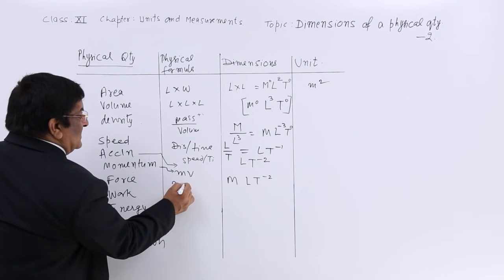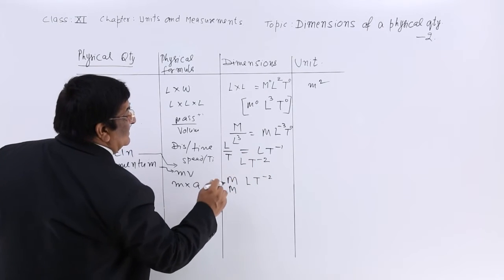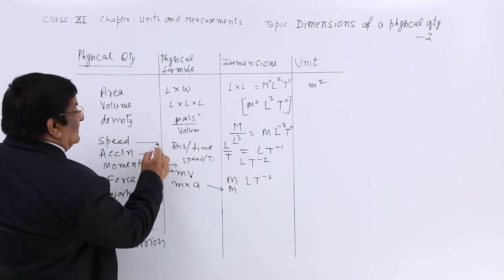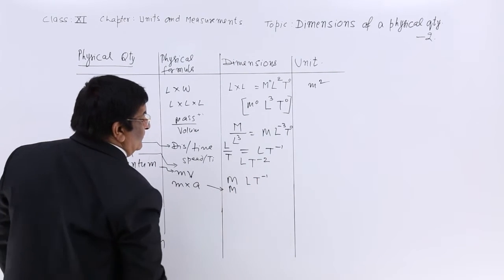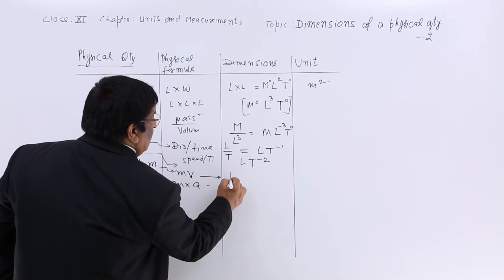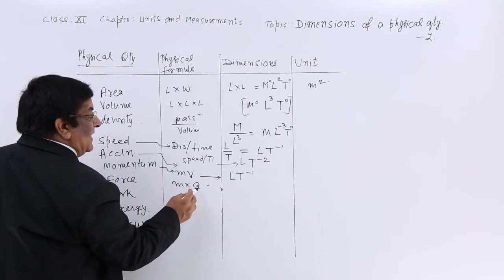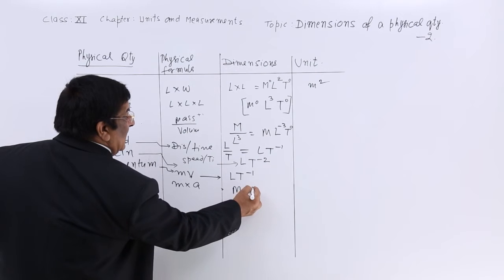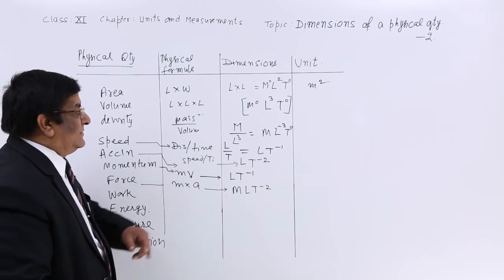Now force. Force is mass into acceleration. For mass we have M. Acceleration has dimensions L T⁻². So force has dimensions M L T⁻², which is one of the very important dimensions.